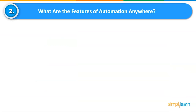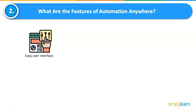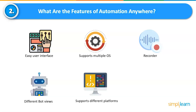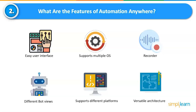What are the features of Automation Anywhere? It offers an easy-to-use interface for building bots and designing business process automation workflows. It supports multiple operating systems such as Windows, Linux, and Mac OS. It consists of a recorder that works on platforms including Microsoft Windows, Citrix, Web, and SAP. It includes different bot views: flow view for business users, list view for developers, and dual view for collaboration. It supports JavaScript, Python, and VBScript, as well as advanced variable capabilities. Another key feature is its versatile architecture that allows for the addition of new command packages.